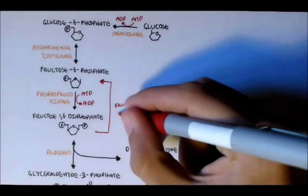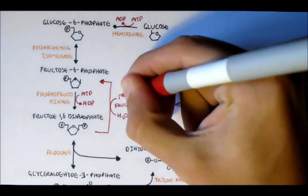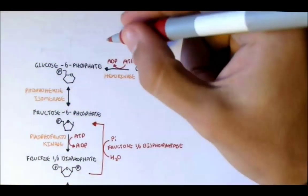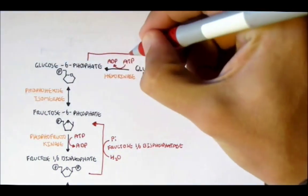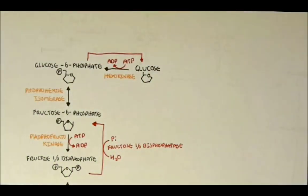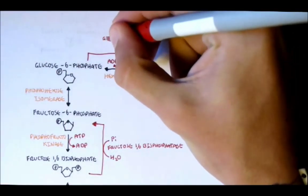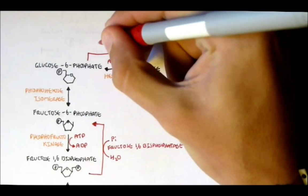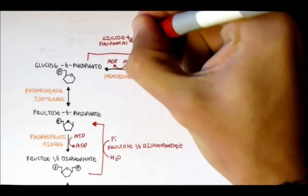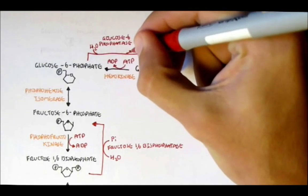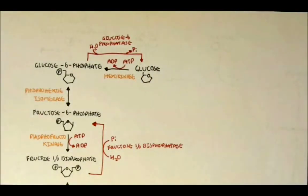So here we will have water coming in and releasing the phosphate group to form fructose-6-phosphate. And the last reaction that cannot be reversed in glycolysis is from glucose-6-phosphate to glucose. The enzyme used to reverse this reaction is glucose-6-phosphatase, and it also is a hydration reaction so water comes in releasing the phosphate group.